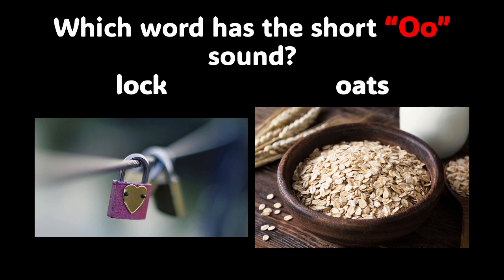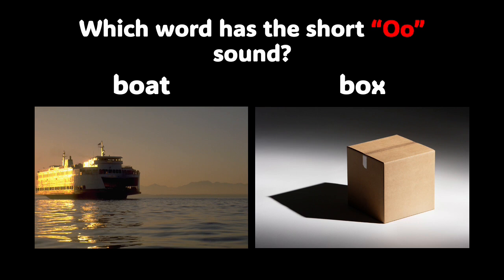We have one more slide to go over. All right, boys and girls, this is our last slide for our comprehension activity. I want to make sure you can recognize words that have the short O sound. We have boat and we have box. Out of those two words, which one has the short O sound? You are correct — it is box. Box has the short O sound. Boys and girls, I think you have learned a lot, and we have one final slide before we end this presentation.